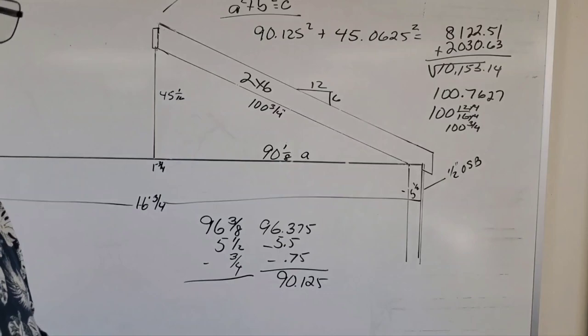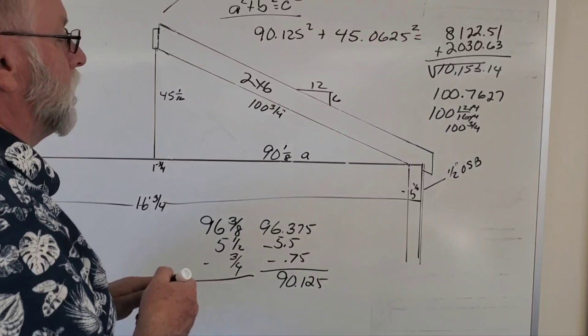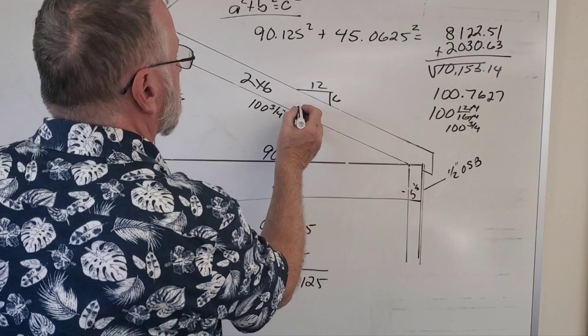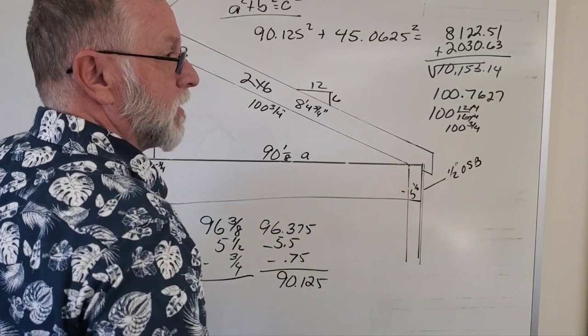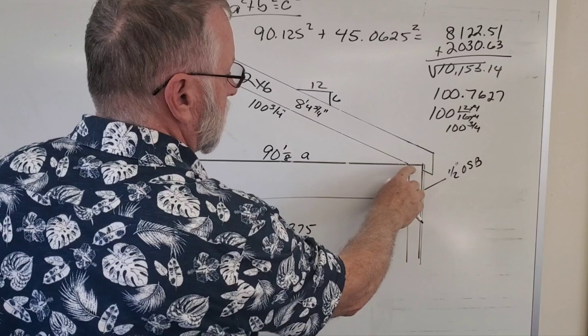Buying something longer than you need, especially with the price of lumber now. So this is 8 foot 4 and 3/4. So I'm just buying a 10 footer, and then whatever my overhang has to be, I'm not going any longer than that.